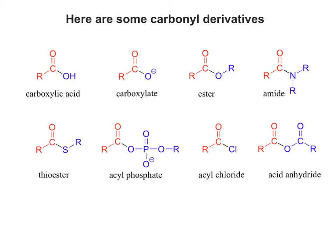Here we've got a range of carbonyl derivatives. Some of them are on your specification and some of them are not. The carboxylic acid, carboxylate, and ester will be covered in a separate video clip, as will amides. Thioesters and acyl phosphates are not on your specification. So with that in mind, the only ones we'll really be looking at are acyl chlorides and acid anhydrides.